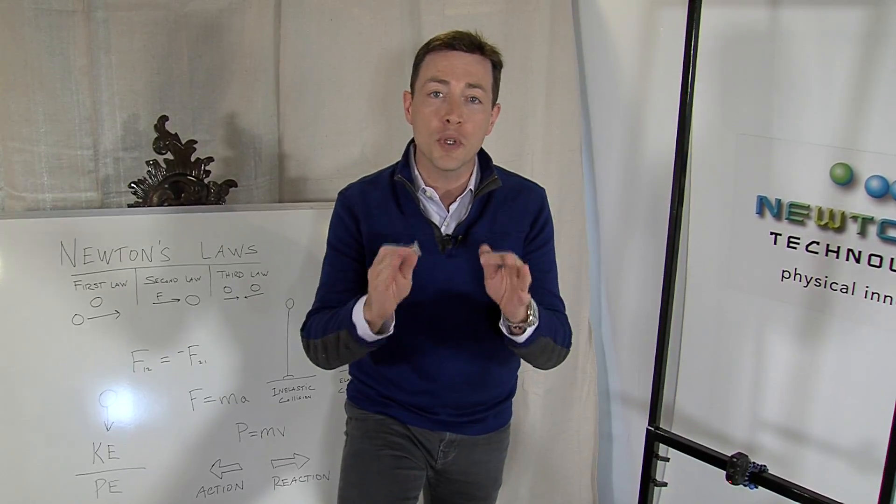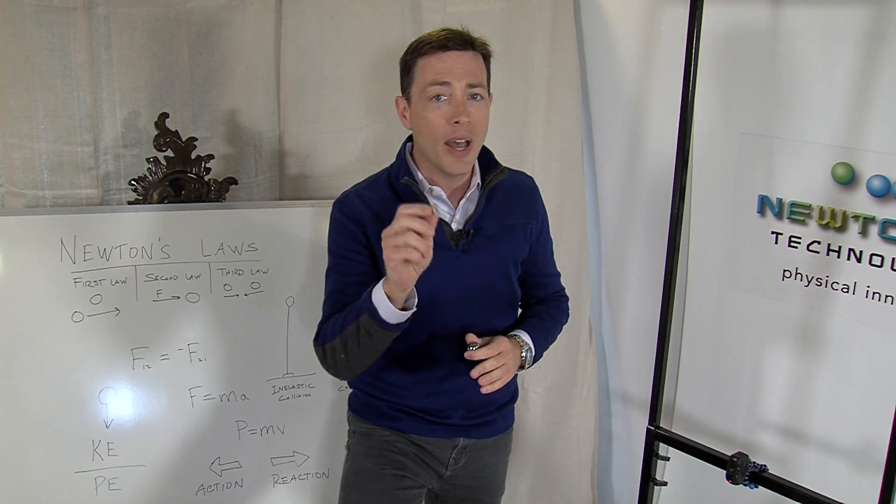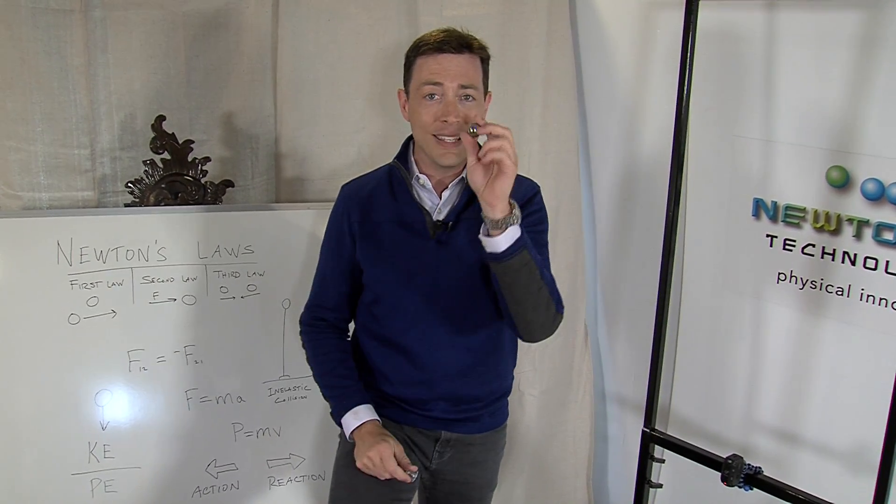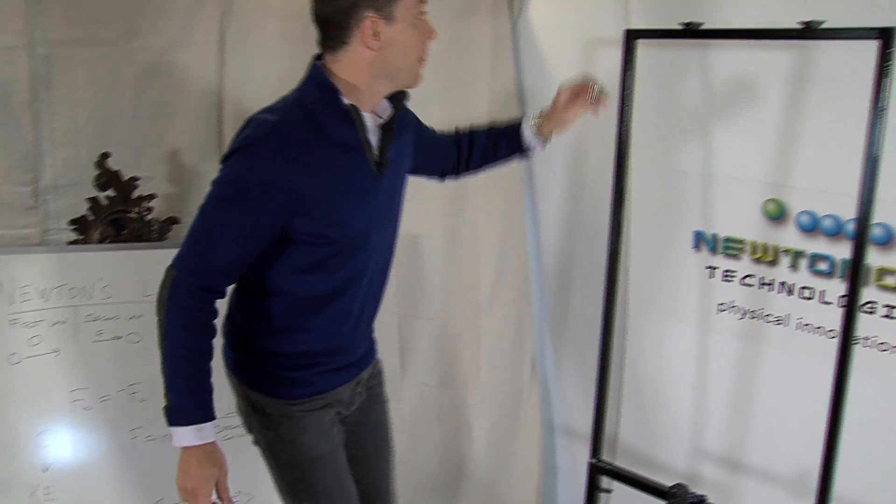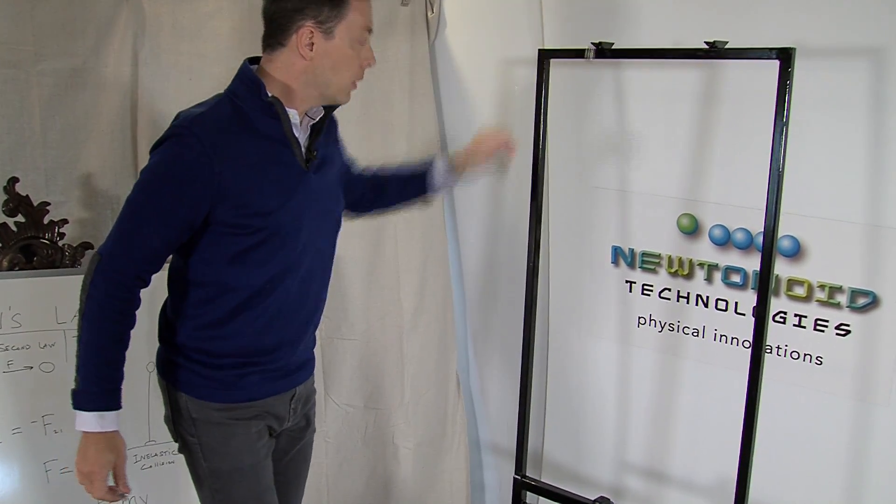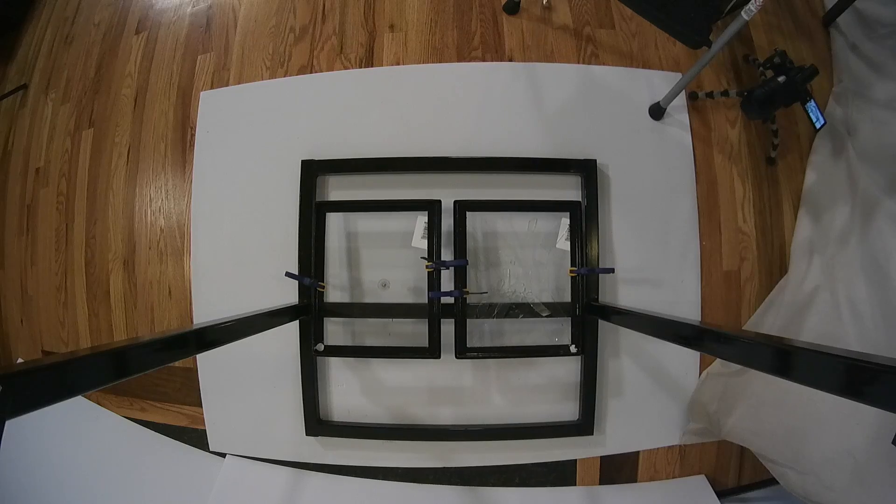Okay, we start with the first pane of glass. Remember this does not have the Absorbud on it and this is a one-inch ball bearing weighing about 67 grams. Look familiar?